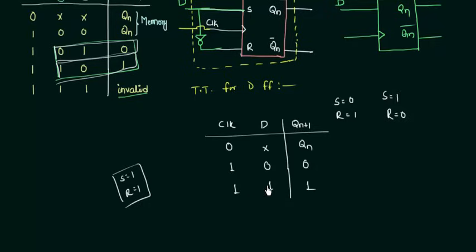In the next presentation what we will have is the characteristic table and the excitation table for the D flip-flop using this truth table. So see you in the next presentation.